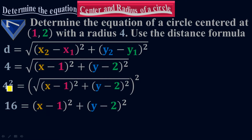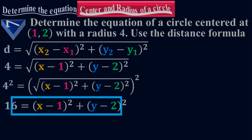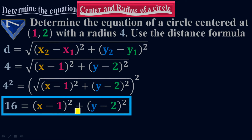As I said, I took the square on both sides, so 4 to the 2 will be 16. So here is the final equation of the circle: 16 equals to x minus 1 to the whole square plus y minus 2 to the whole square. That is your objective — to determine only the equation of a circle, nothing more than this.